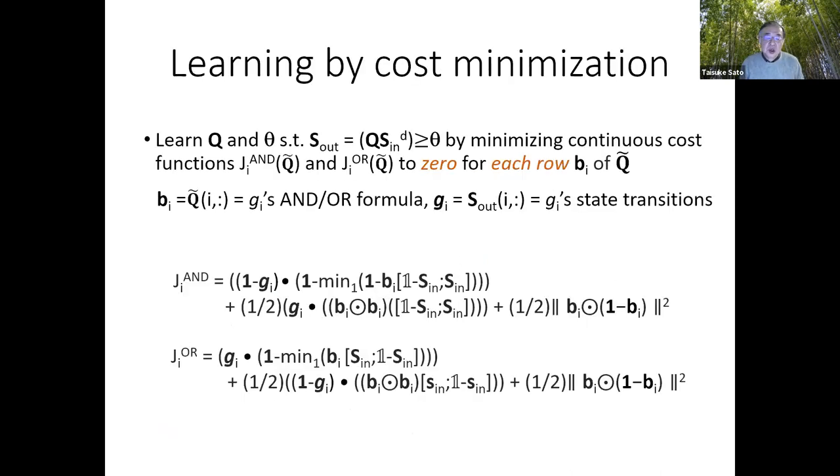Using this fact, given S_in and S_out, we learn binary Q and integer theta by minimizing continuous cost functions, Ji^AND and Ji^OR for each gene i defined below, to zero.